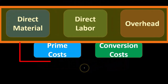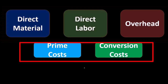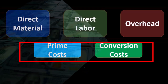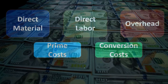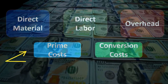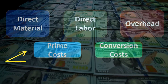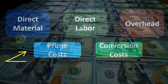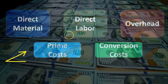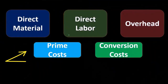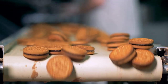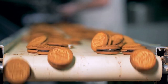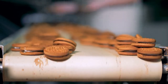Now, when we consider these in terms of prime costs and conversion costs, there's a bit of an overlap. The prime costs represent what is going to be directly within the product. Therefore, prime costs include direct materials and direct labor. The direct labor — we can't really see it within the product like the direct materials, but it's so closely associated to and essential to the production that we call those the prime costs.